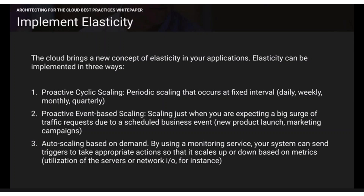With proactive cyclic scaling, you can schedule daily, weekly, monthly, or quarterly. For example, every Monday my game starts at 9 AM and I expect at least 5,000 users, so I scale my systems up to cater to them. For proactive event-based scaling, think of an e-commerce website like Flipkart or Amazon launching a new product at 8 PM — like a Redmi mobile sale — which doesn't happen every day but once in a while.